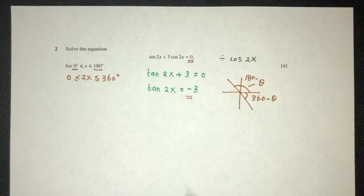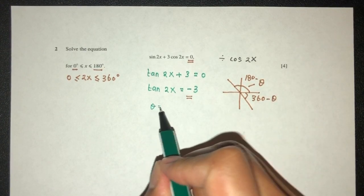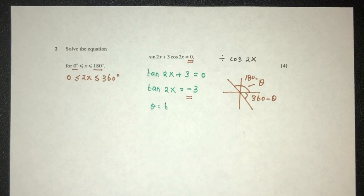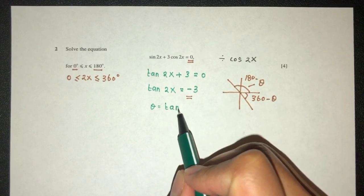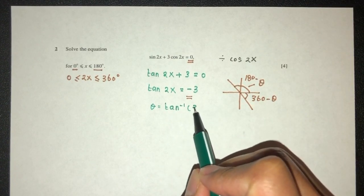So let's first find the value of theta. Theta is not the answer, it is the angle in these quadrants. So theta will be tan inverse of the positive value of 3.